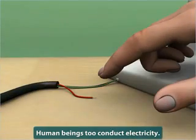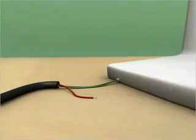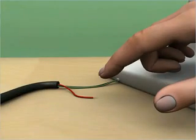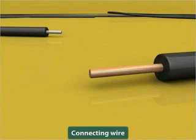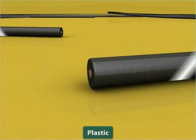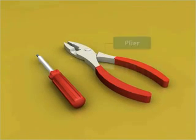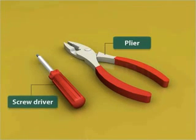To protect us from electric shock, all the connecting wires are covered with insulators such as plastic. Also, the handles of devices like pliers and screwdrivers used by an electrician are made of plastic.